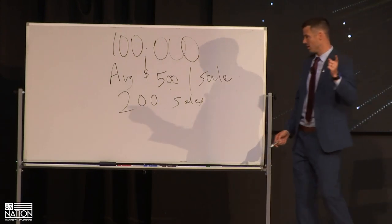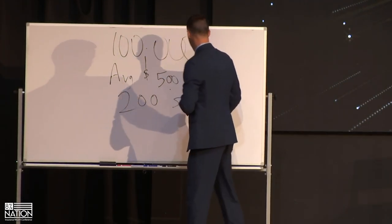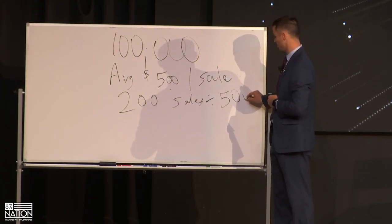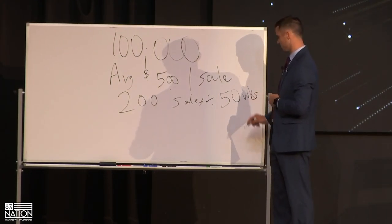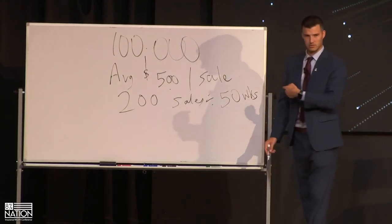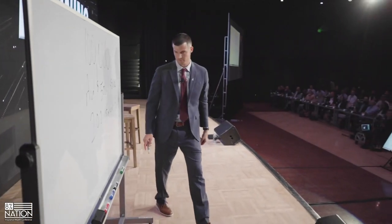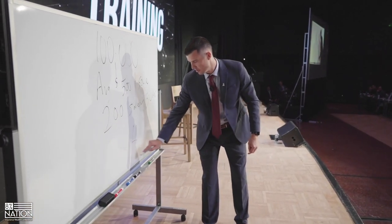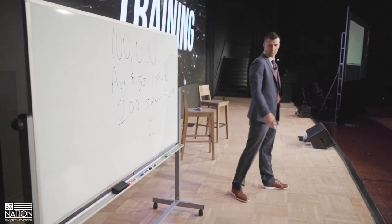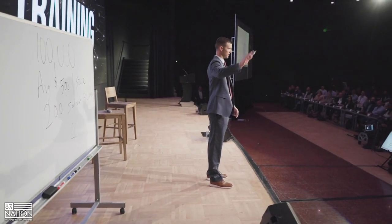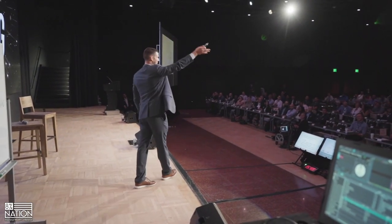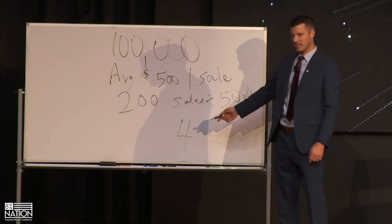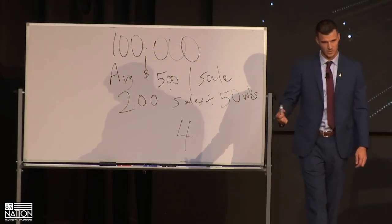200 sales. I'm going to take that and divide it by 50 weeks. So you end up with four. I gave you two weeks off for vacation — who likes vacation? Four sales a week. That's what it comes down to.